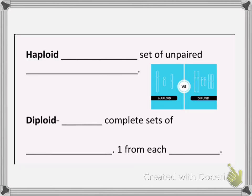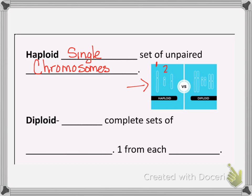Some more technical words: haploid is a single set of unpaired chromosomes, which means you're not getting one from the mom and one from the dad — you're just getting one from the mom or the one from the dad, because it's one parent. So those are all single different chromosomes; they are not the same. Whereas in diploid, you're getting two complete sets of chromosomes, one set from each parent.